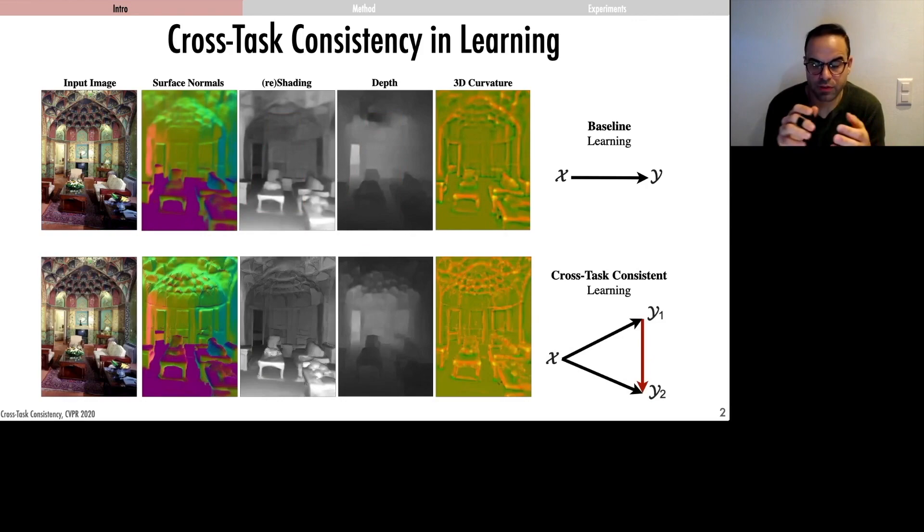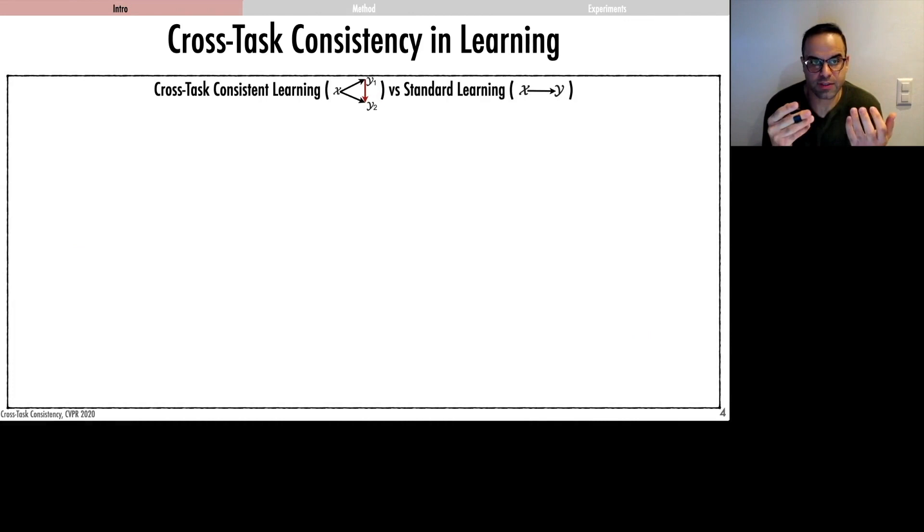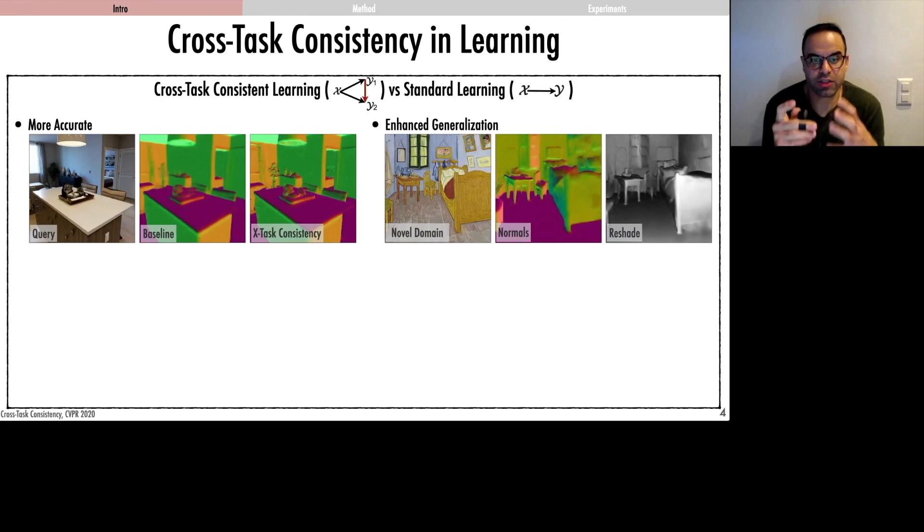We show that learning with cross-task consistency fits the data better and makes more accurate predictions, gives models with better generalization and more consistent predictions, and also leads to an informative intrinsic quantity which we call consistency energy.